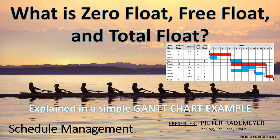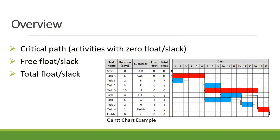What is the difference between zero float or slack, free float, and total float? In this video I'll be using a Gantt chart example to explain the critical path, which contains activities with zero float, as well as the difference between free float and total float.